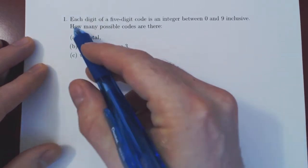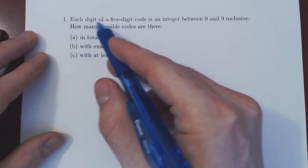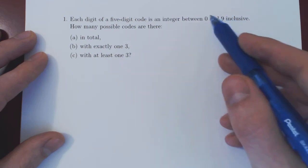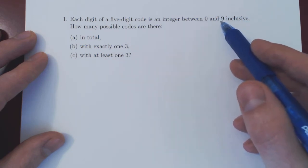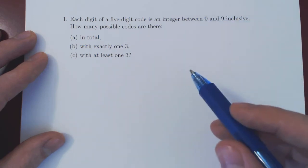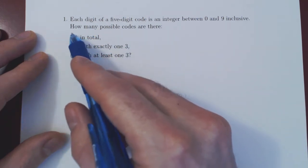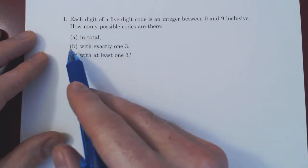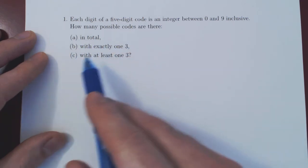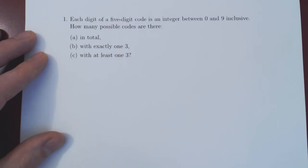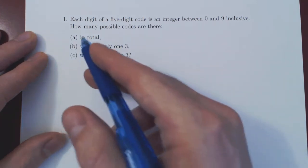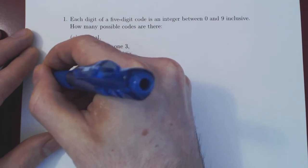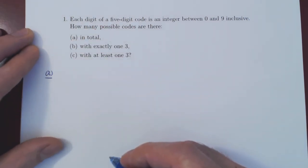Here's the problem: each digit of a five-digit code is an integer between 0 and 9, inclusive — so 0, 1, 2, 3, up to 9, giving us 10 possibilities. We are asking: (A) how many possible codes are there in total, (B) how many with exactly one 3, and (C) how many with at least one 3? Let's start with A — this is not an example of the complement rule, just a warm-up problem.